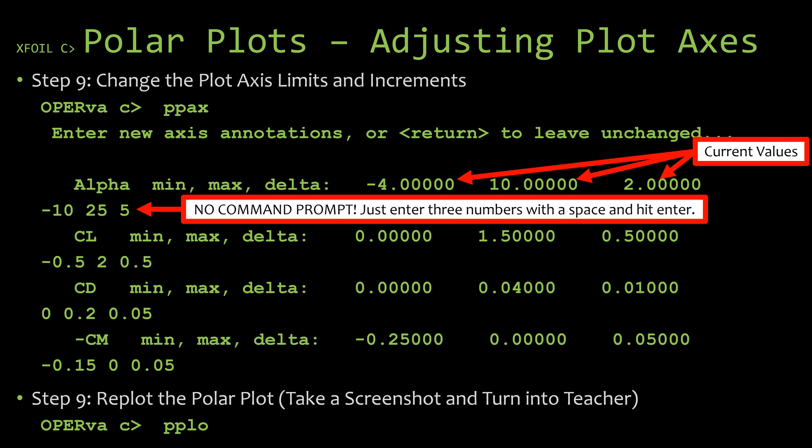Do the same thing with the coefficient of drag. Now what is interesting here is if you look at the moment coefficient axes, you'll see a negative sign, and this is because the moment coefficient is actually plotted upside down with the coefficient of lift of zero line being the same as the moment coefficient of zero line. For the moment plot the negative values are actually going up. Now what this actually means is that the minimum value there is going to be at the top of the plot, the max value is going to be towards the bottom of the plot, and then the delta is going to be the spacing between the lines. So go ahead and type in those numbers and hit enter.